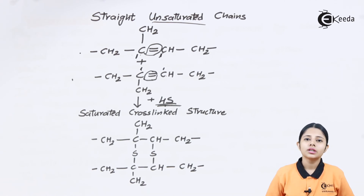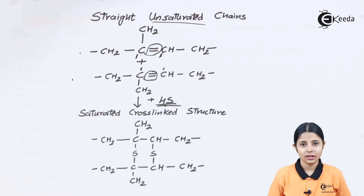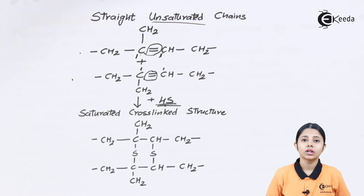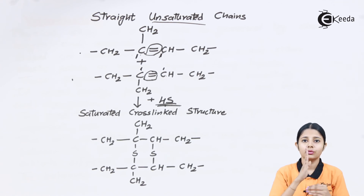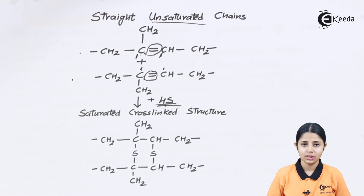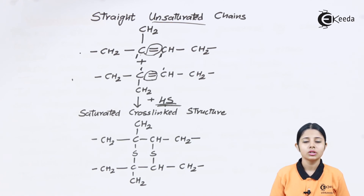In today's session we studied what exactly is vulcanization of rubber, the different kinds of vulcanizing agents, and how two linear linkages come together to form a cross-bond, creating vulcanized rubber. Thank you for watching — stay tuned to Ekeeda and subscribe to Ekeeda.